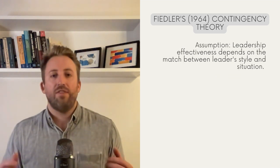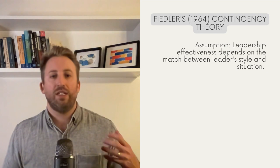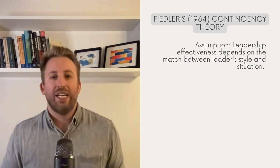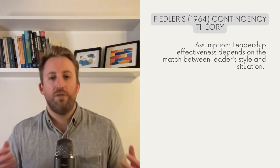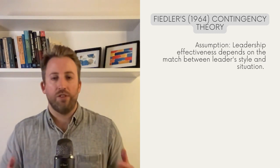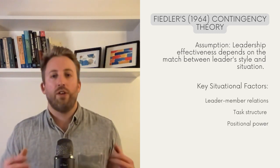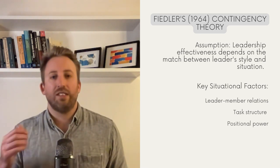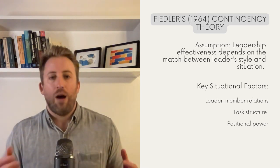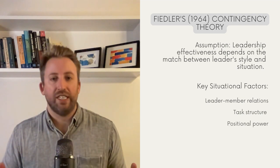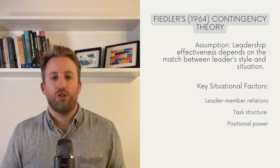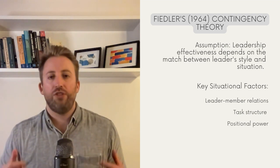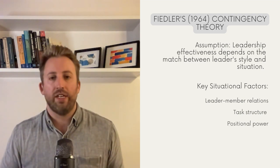Fiedler's model assumes that effective leadership depends on a match between a leader's style and the situation. It's related to the idea of person-environment fit that we talked about in the lecture on stress. In this model, there are three crucial situational factors. The first is leader-member relations — how much do followers trust the leader? The second, task structure — the structure inherent in the job. And the third, positional power, or the leader's authority.